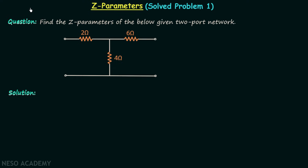In the previous lecture we had discussion on Z parameters and now we are going to solve one problem in which we will understand the process to calculate the Z parameters. According to the problem we are required to find the Z parameters of the given two port network.